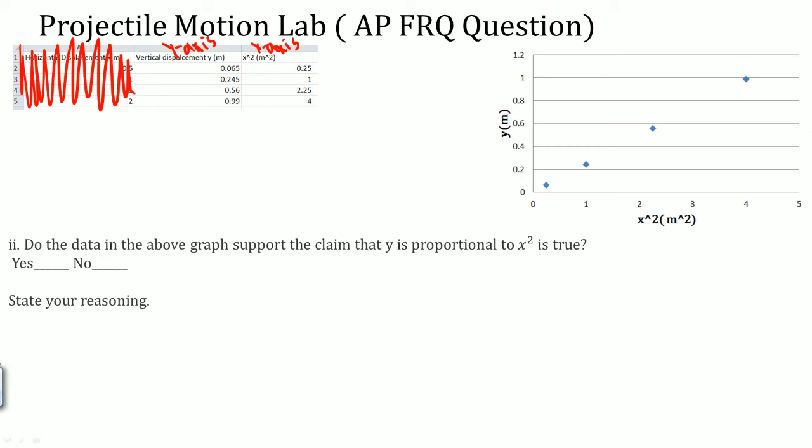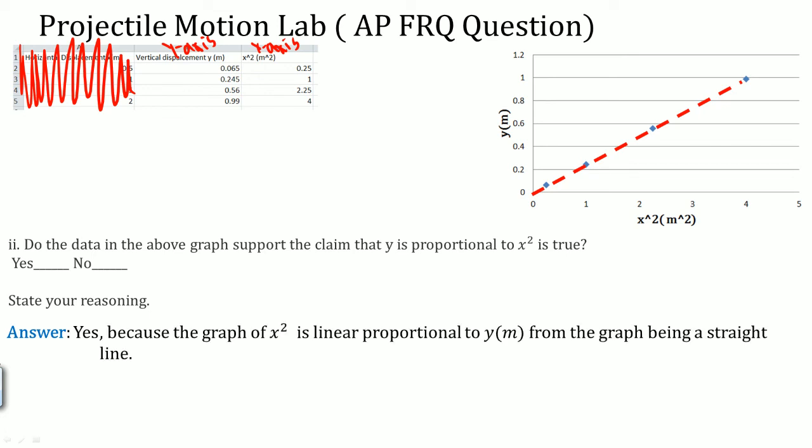You only get a point for the explanation. I wrote yes, but the explanation is where you get the points. I said yes, and I drew a line, and I saw that it was linear. I said because the x squared is linearly proportional to the y from the graph being a straight line. That is how I explain that y is proportional to x squared.